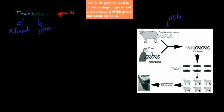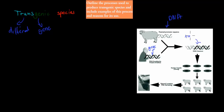We take a gene from the human and put it into the gene code of the sheep. Then we have a new gene code, and this will make a transgenic species.